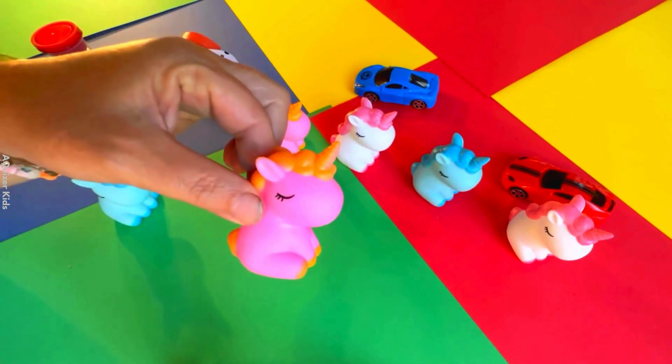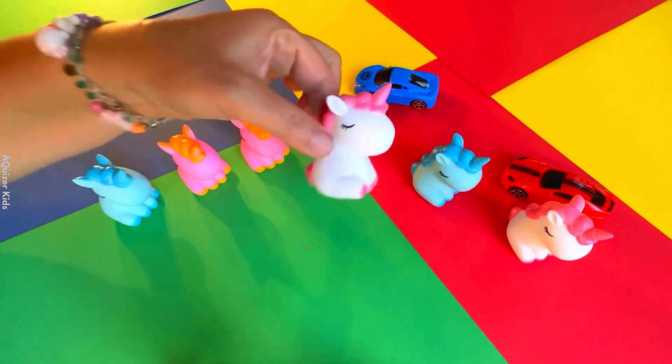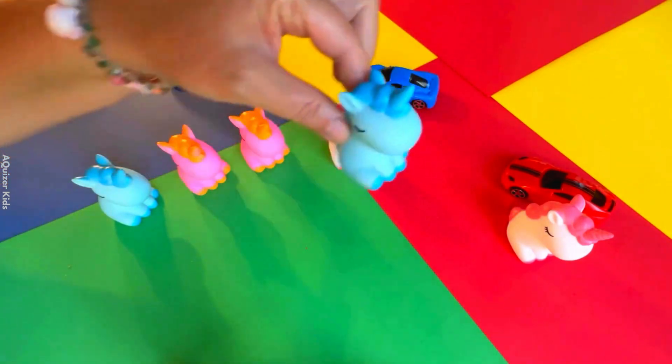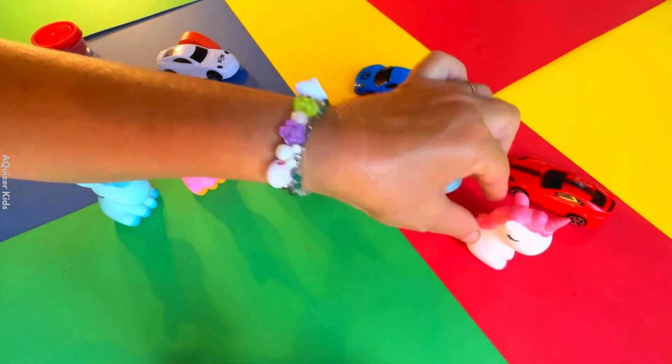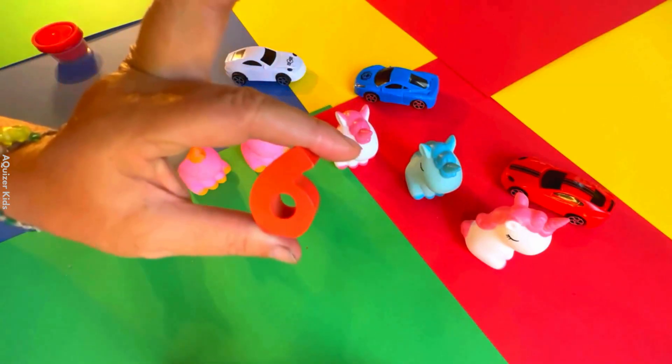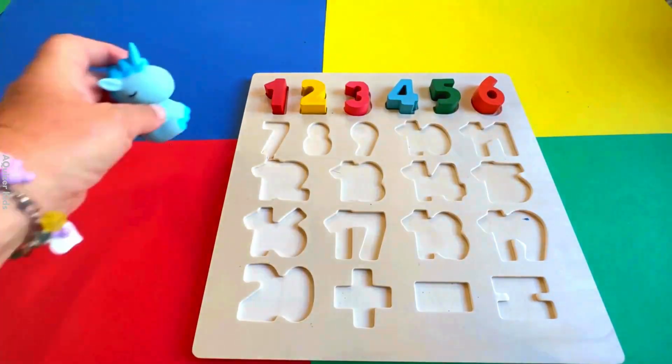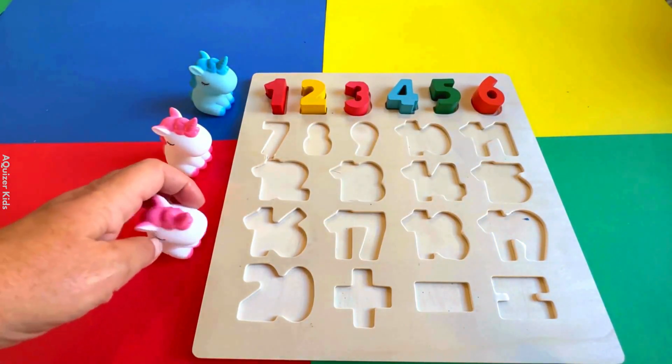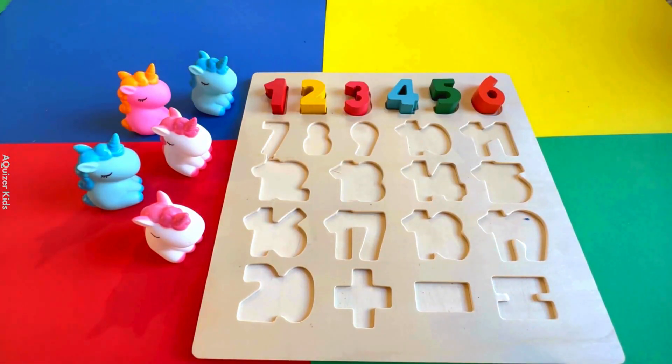One, two, three, four, five, and six. Hey, what's behind the little white car? Behind the car is number six. One, two, three, four, five, and six.